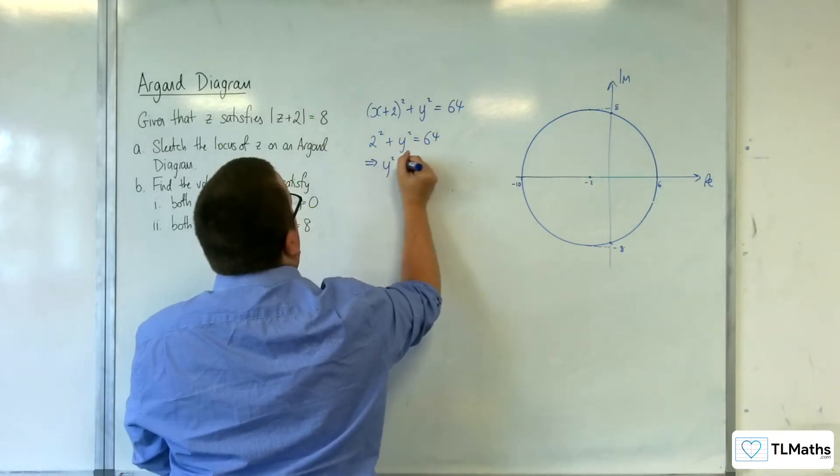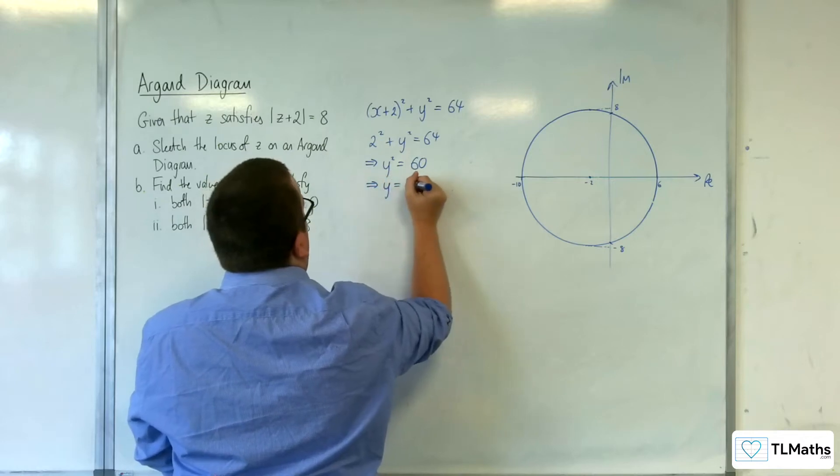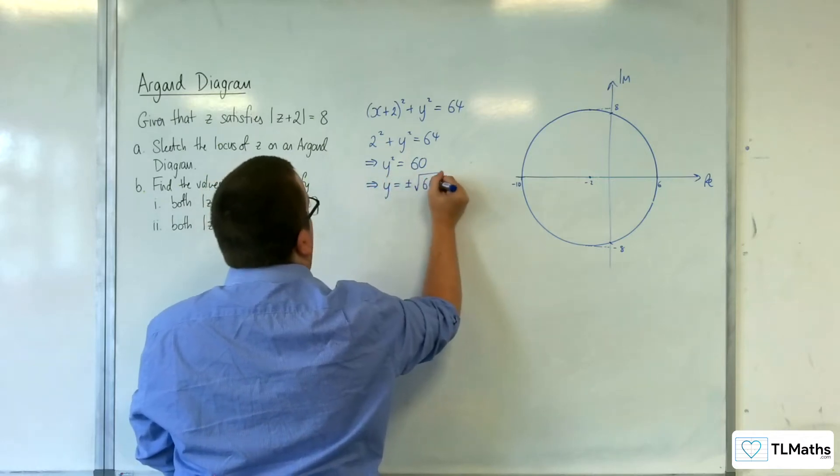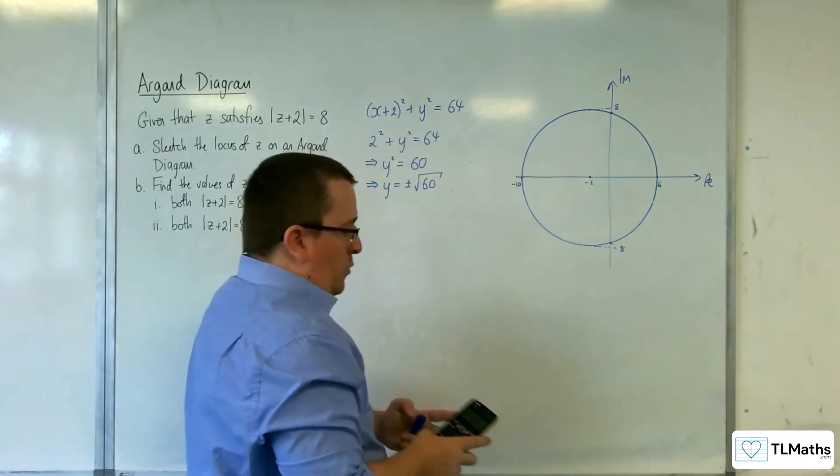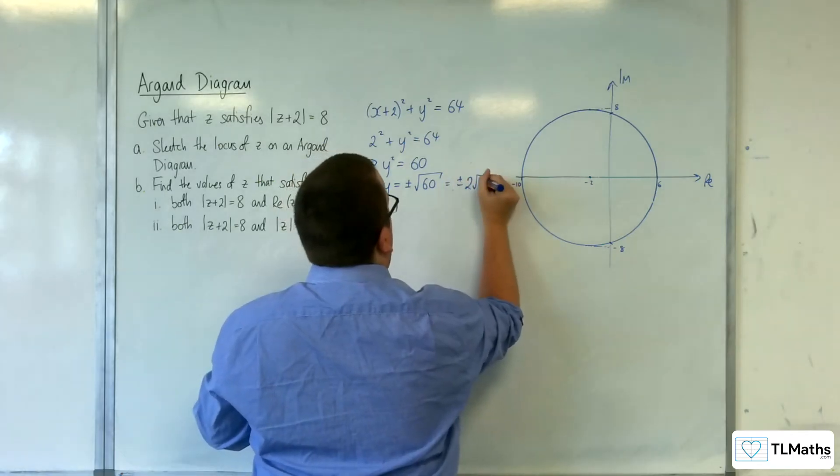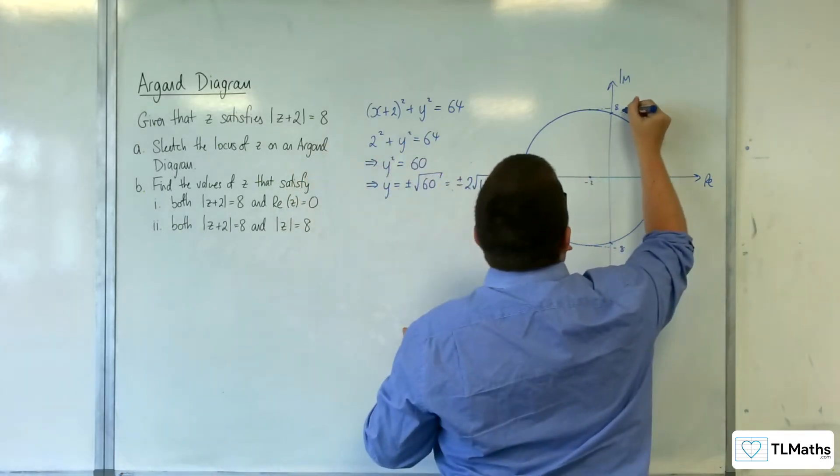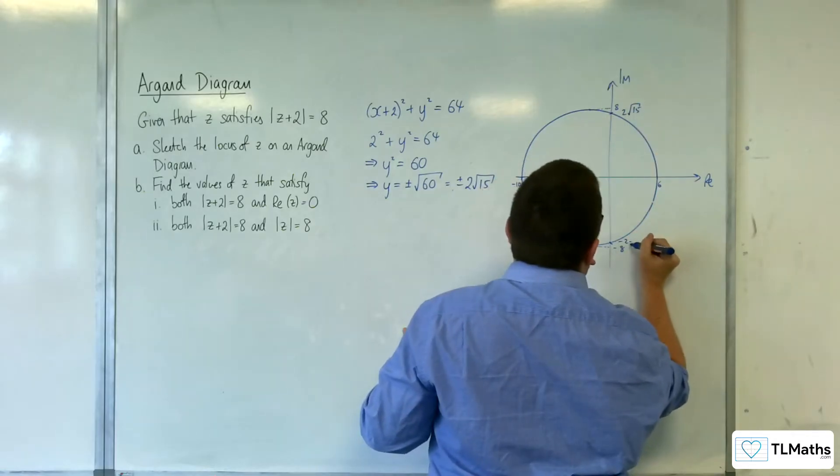So, y squared is going to be equal to 60. So, y is going to be equal to plus or minus the square root of 60. OK. So, 2 root 15. So, there is going to be 2 root 15. And this point is going to be minus 2 root 15.